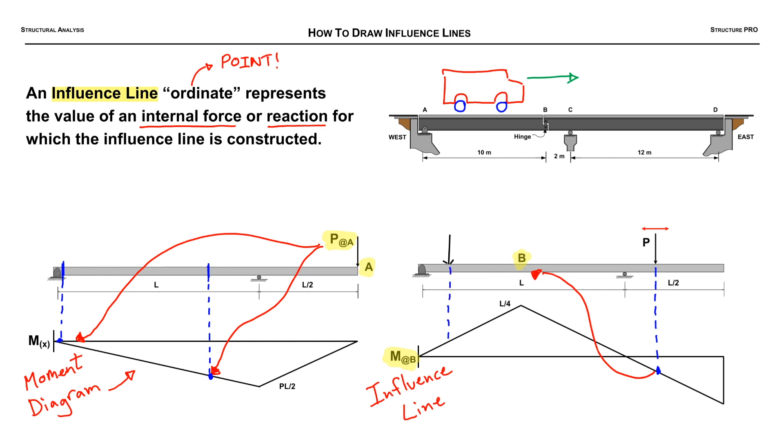Alright, so the influence line is going to help us see the effect of a moving load for a particular internal force or reaction that is of interest for us. So it's going to help us answer the question, where should we put this truck to get the worst load effect at a certain spot?